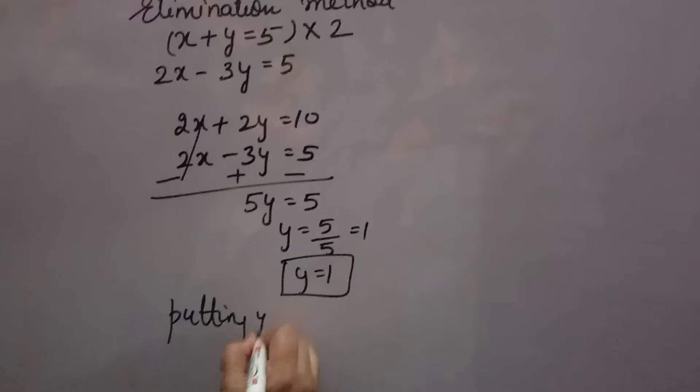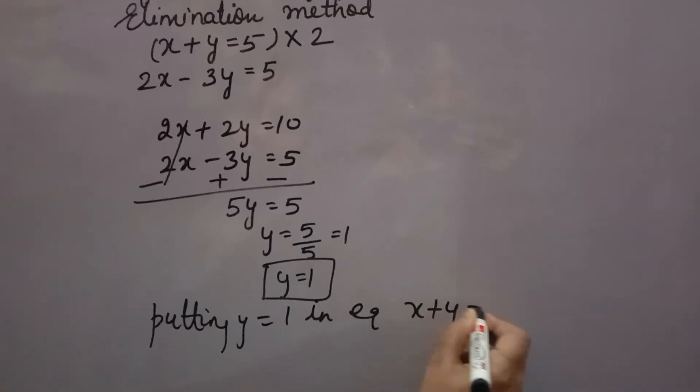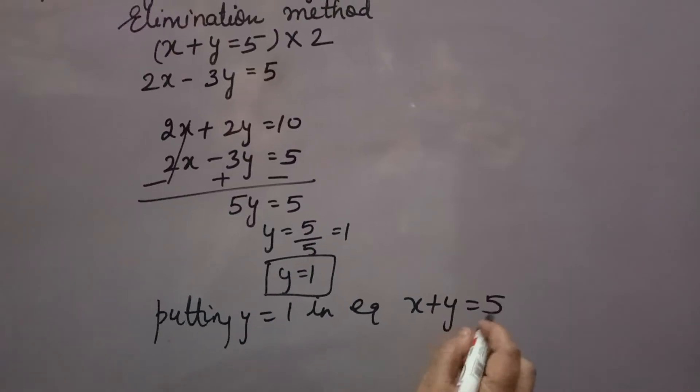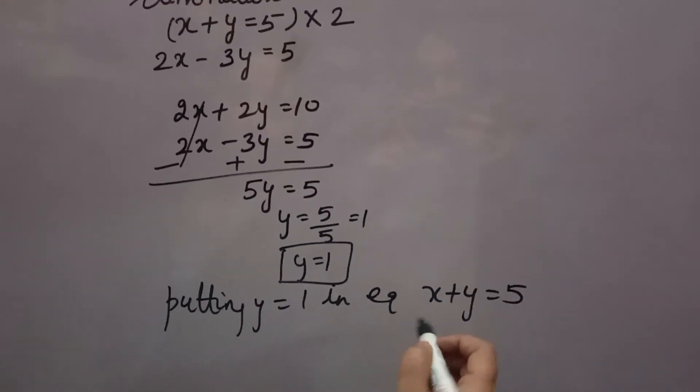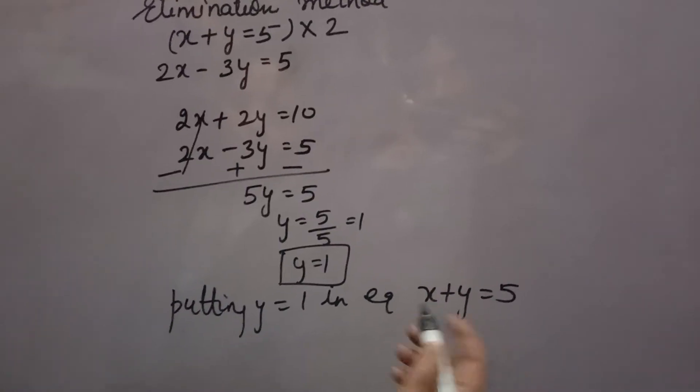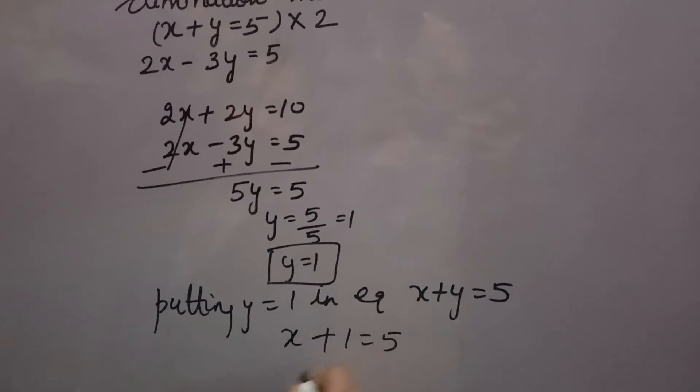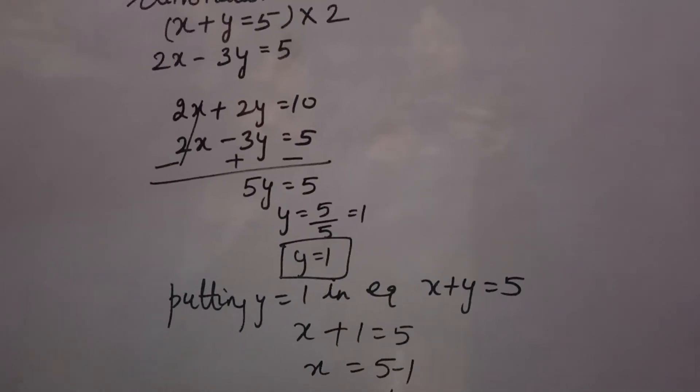Putting y is equal to 1 in equation x plus y is equal to 5. Another one also you can write, but it is easy, so I am doing this. Other one is complicated. 2x minus 3y is equal to 5. Now, you will put here x plus 1 is equal to 5. x will come equal to 5 minus 1, that is 4.